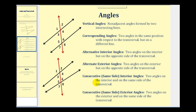Next we have consecutive interior angles, sometimes called same side interior angles. These are two angles on the interior and on the same side of the transversal. So angle four and angle six are consecutive or same side interior angles, as well as angle three and angle five.